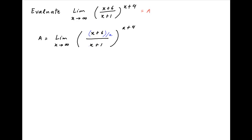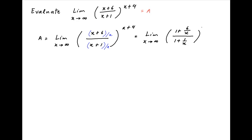Now divide the expression in the brackets in both the numerator and the denominator by x. Therefore, this limit can be written as the limit as x tends to infinity of (1 plus 6 upon x) divided by (1 plus 1 upon x), whole raised to the power (x plus 4).